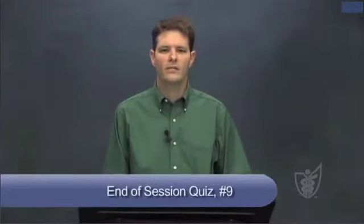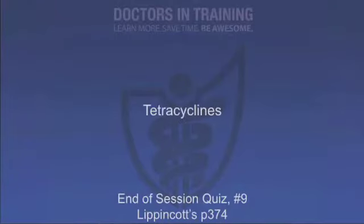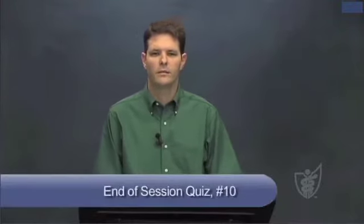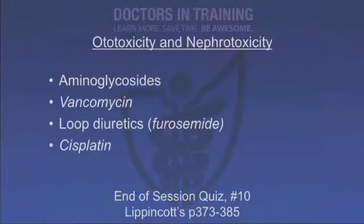Question 9: Which antibiotic class should never be taken with milk or iron? Tetracyclines — divalent and trivalent cations (calcium in milk or supplements, iron, magnesium, aluminum in antacids like Tums) chelate tetracyclines and impair absorption. Question 10: Which drugs have ototoxicity and nephrotoxicity as side effects? Aminoglycosides, vancomycin, loop diuretics such as furosemide, and cisplatin.